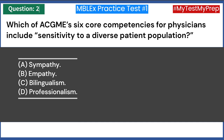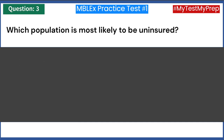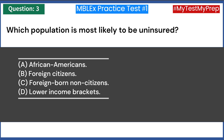Answer: D — professionalism. Which population is most likely to be uninsured? A) African Americans. B) Foreign citizens. C) Foreign-born non-citizens. D) Lower income brackets. Answer: C — foreign-born non-citizens.